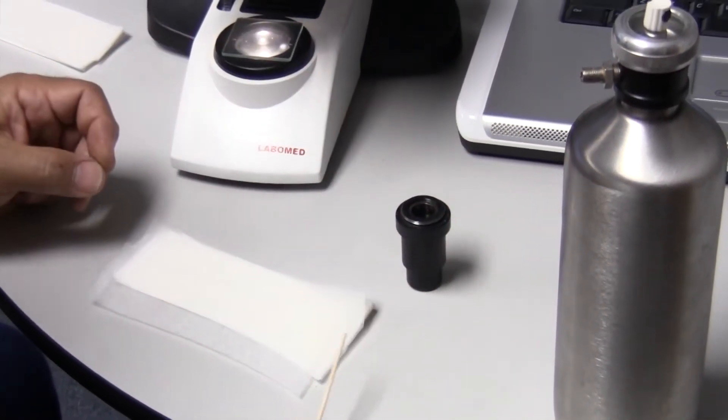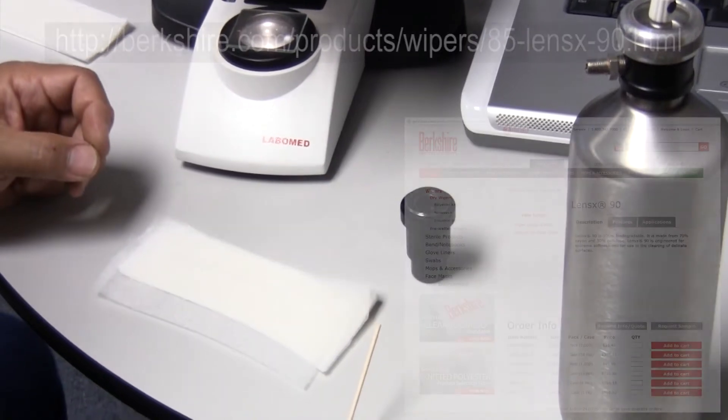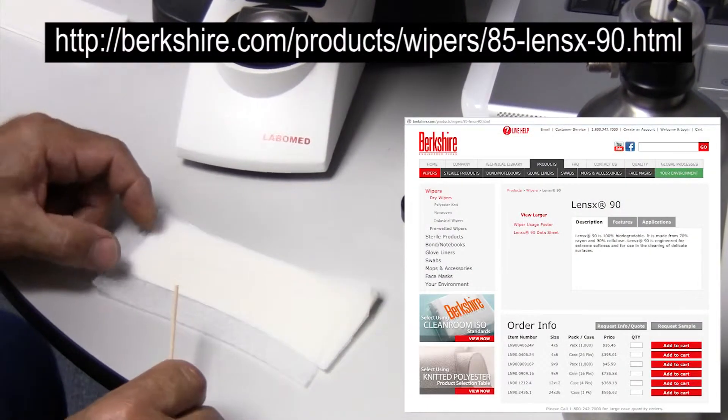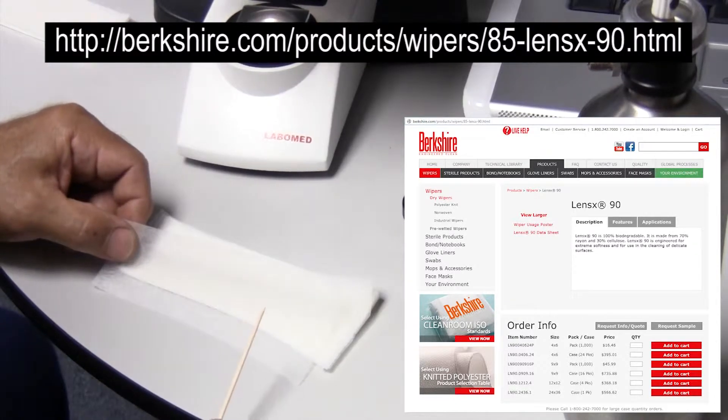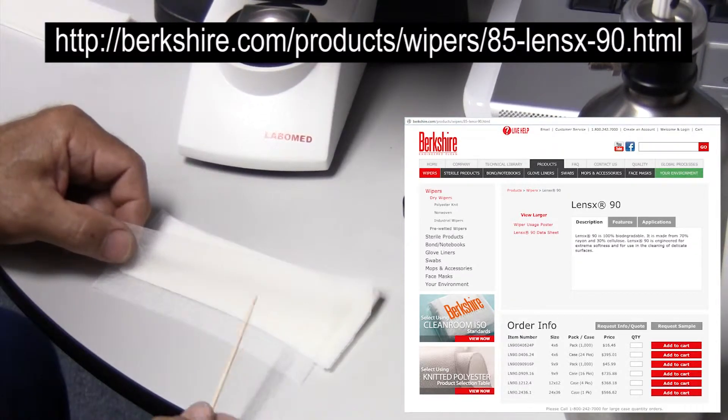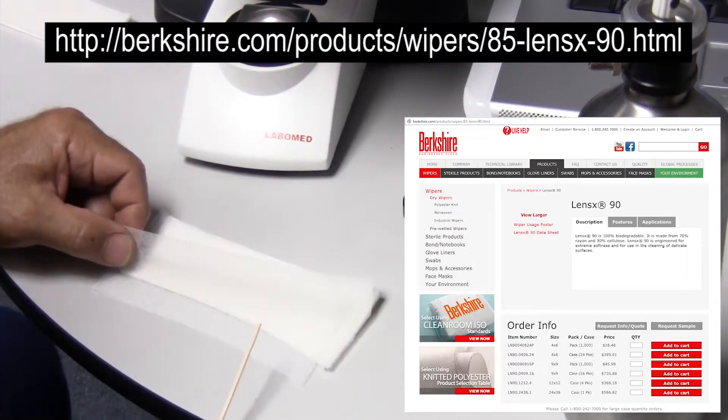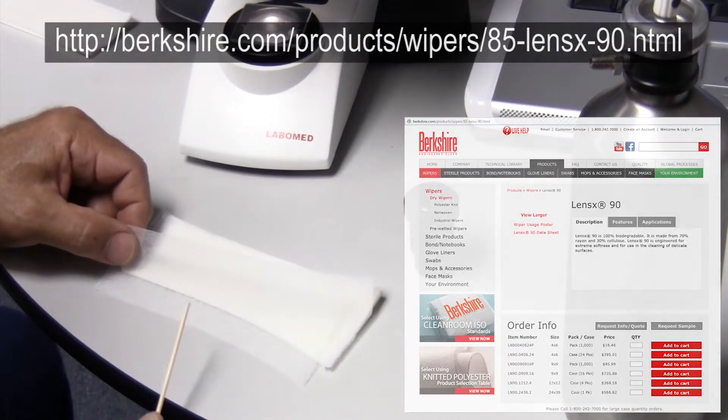The paper I use is called Berkshire LensX 90. This is a special, primarily rayon fiber. It doesn't leave the dust and lint behind that you'll get from either, like a tissue, a kim wipe, or even a cotton swab, which is probably the worst thing to use.